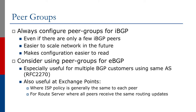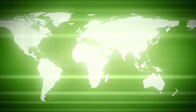Peer groups are also useful when the operator has many BGP customers all using the same AS number — BGP customers that are multi-homed onto the local network, following the principles in RFC 2270, which we'll describe at some point in this series.